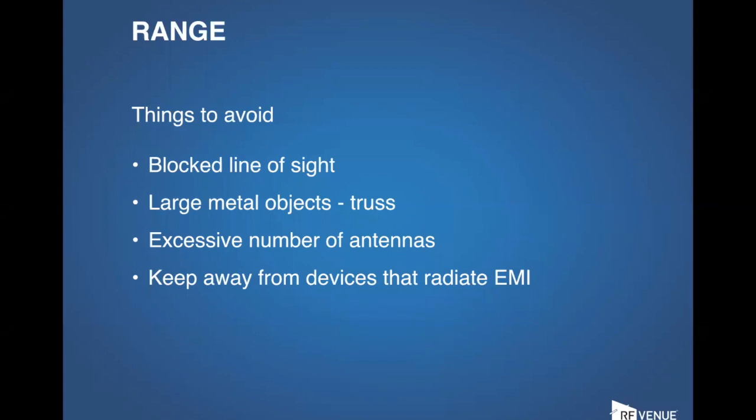Antennas interfere with each other. They cause noise. They detune things. Bad stuff happens when you get antennas close together. If you have to have antennas close together, we'd like them to be at least one wavelength apart. In the US, that roughly means two feet. So if you've got eight little receivers with their little whips at two feet apart, you're going to need an awfully large desk. The correct way to do that is with a distro. And another thing you want to avoid is anything that radiates EMI.